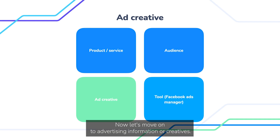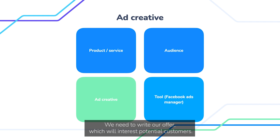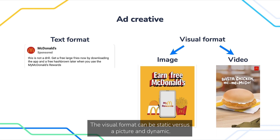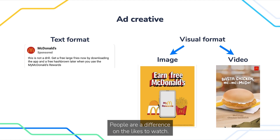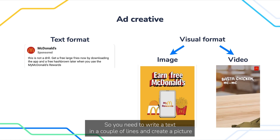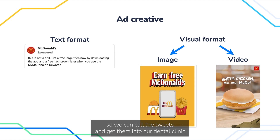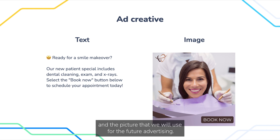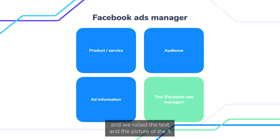Now let's move on to advertising information, or creatives — the third part of setting up an advertising campaign. We need to write our offer which will interest potential customers. Facebook Ads has two main components: text format and visual format. The visual format can be static — a picture — or dynamic — a video. These two formats work together. People are different: someone likes to watch, someone likes to read. So you need to write a text in a couple of lines and create a picture that will make the person take the action you need. In our case, that is to complete a form with contact information so we can call those leads and bring them into our dental clinic. On the slide you can see the text and the picture we will use for the future advertising. You can find the text and the picture below this video.